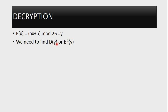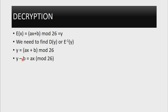To decrypt, we can write D(Y) or use the inverse notation. We recall that E(X) = AX + B mod 26 = Y. To come up with the decryption formula, we have to make X the subject. The first thing is to subtract B on both sides: Y - B = AX + B - B, which eliminates B. So Y - B = AX mod 26, which is the same as saying AX = Y - B mod 26.